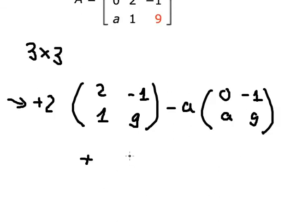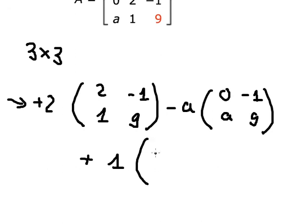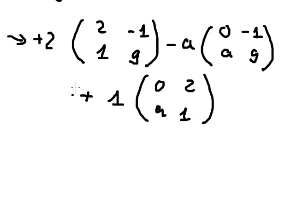Plus we have 1, and we hide this one and this one. So we have this matrix here. Now let's go to the next one.